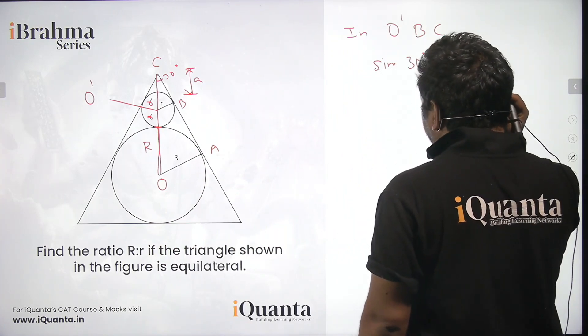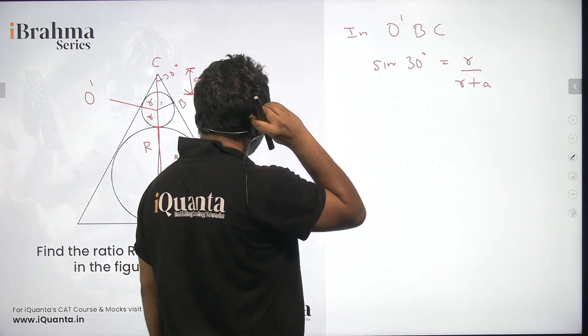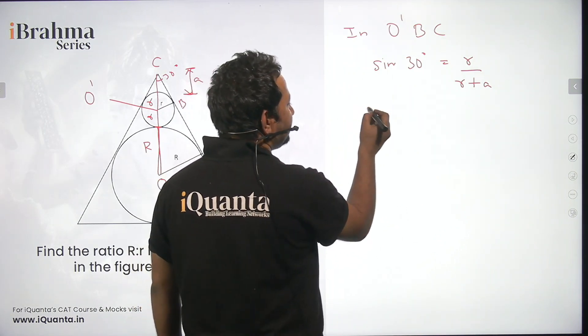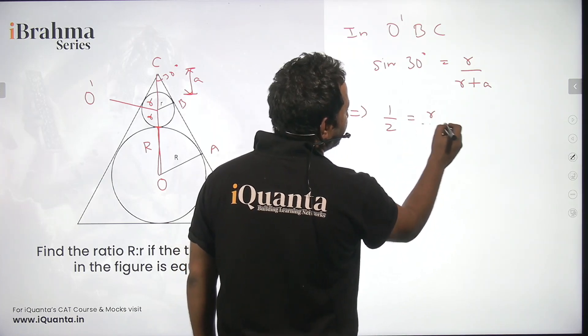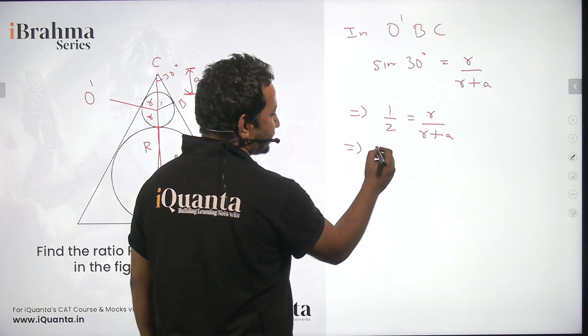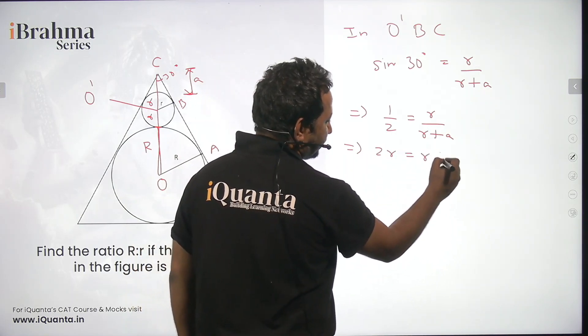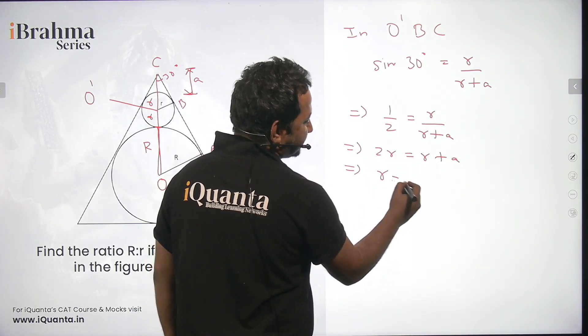The value of sine 30 as you all are aware is equal to 1 by 2. So I can say 1 by 2 is equal to small r upon small r plus small a. If I solve this I get 2r is equal to r plus a or we can say r is equal to a.